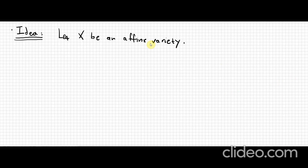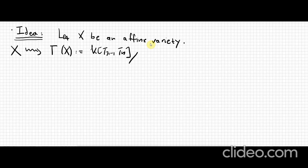We recall some basic things from classical algebraic geometry. We consider an affine variety X. In classical algebraic geometry, we start with this geometric object X that we want to study, and then we associate to it the so-called affine coordinate ring, which by definition is the polynomial ring modulo the ideal of X. This is a finitely generated k-algebra.